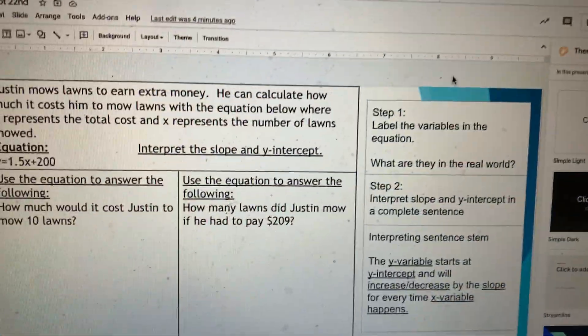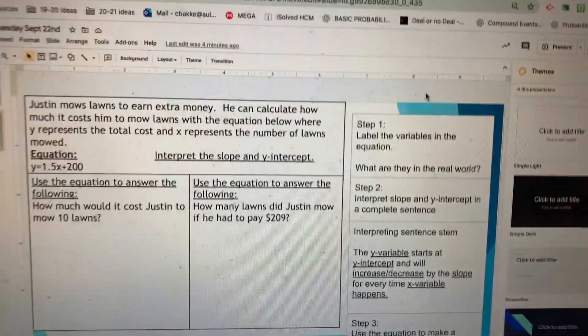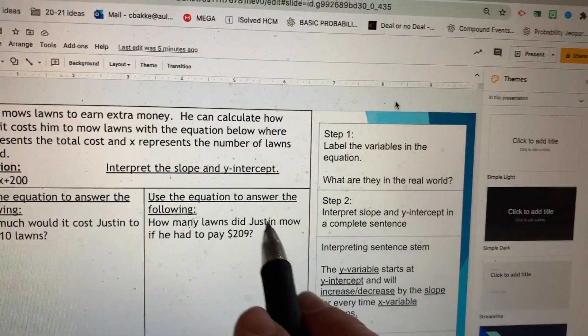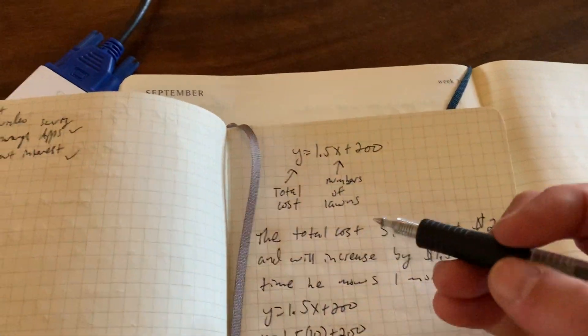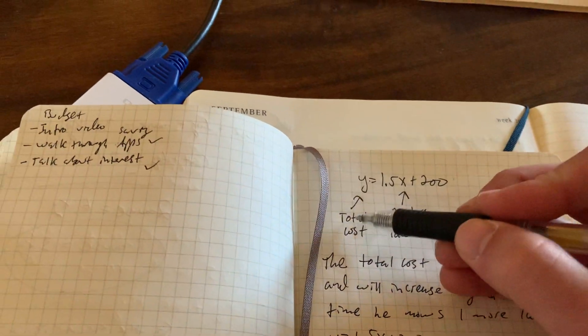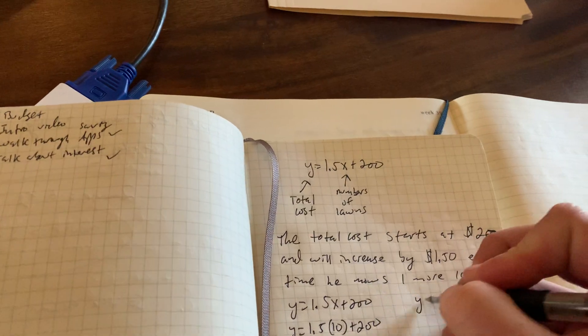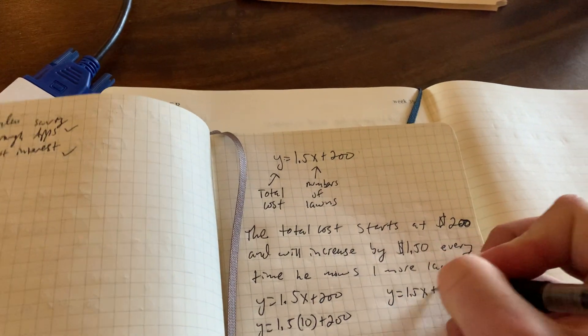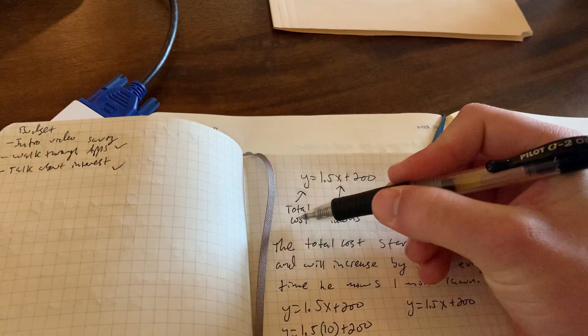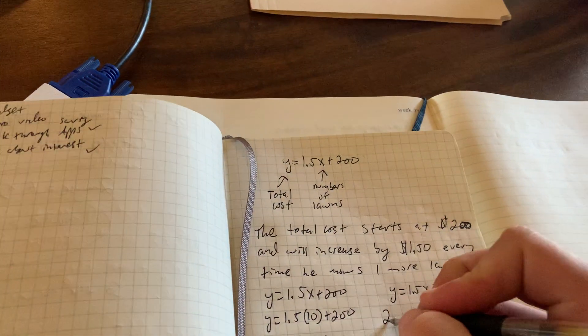Now let's go with the next one. So, how many lawns did Justin mow if he had to pay $209? We're going to take that number and decide, is it Y or X? $209 sounds like a total cost. $209 is not a number of lawns. Sorry about the dogs. So since $209 is a total cost, I'm going to plug that in for Y.